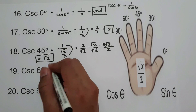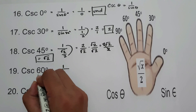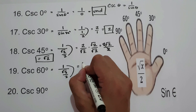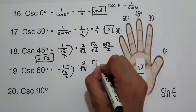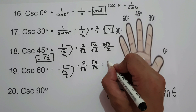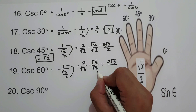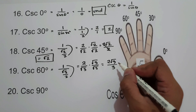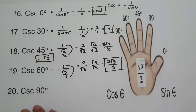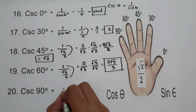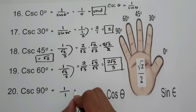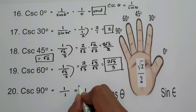For cosecant 60°, that is 1 over sine 60°, which is 1 over (square root of 3 over 2), giving 2 over square root of 3. Rationalizing gives 2 square root of 3 over square root of 9, and square root of 9 is 3. So cosecant 60° is 2 square root of 3 over 3. For cosecant 90°, that is 1 over sine 90°, which is 1 over 1 = 1. Cosecant 90° is 1.